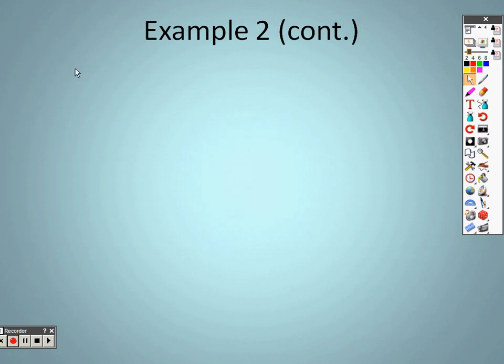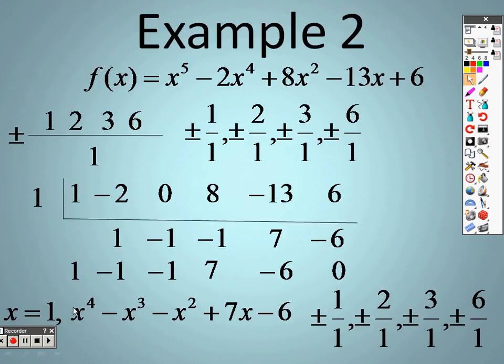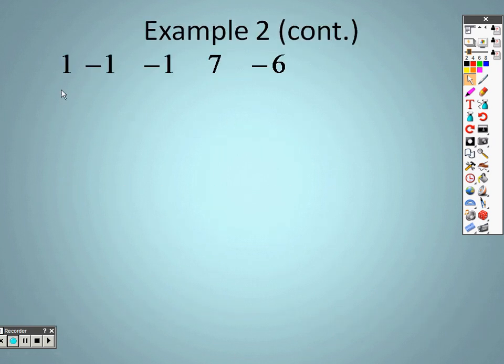So, on the next page, here was what we have, right? 1, negative 1, negative 1, 7, negative 6. So, that's what we have here. And I have to pick one of those again to try. Well, I already tried 1, so let's try 1 again. So, when I bring 1 down, 1 times 1 is 1. And you could have chose 6, you could have chose negative 6, you could have chose 3, you could have chose negative 3. But I chose 1 again to make this easier.